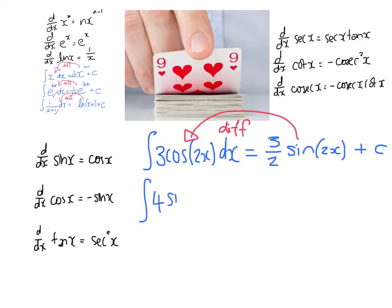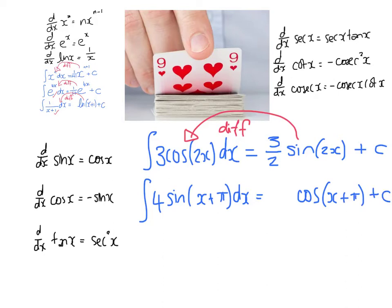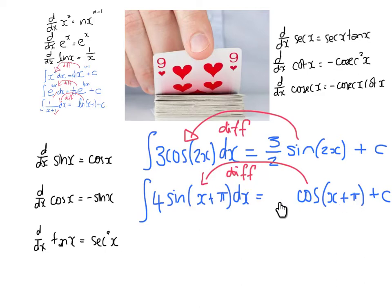Something like 4 sin(x plus π). Cos differentiates to sin, so it must have come from cos — cos must be the mother function and the baby must be x plus π. That's my basic answer; now let's think it through. The cos goes to sin, the baby is x plus π, and the derivative of the baby is just 1, so that's not a problem. The only issue is I'm missing the 4 — well, that's easily fixed, let's just put the 4 in. Done.